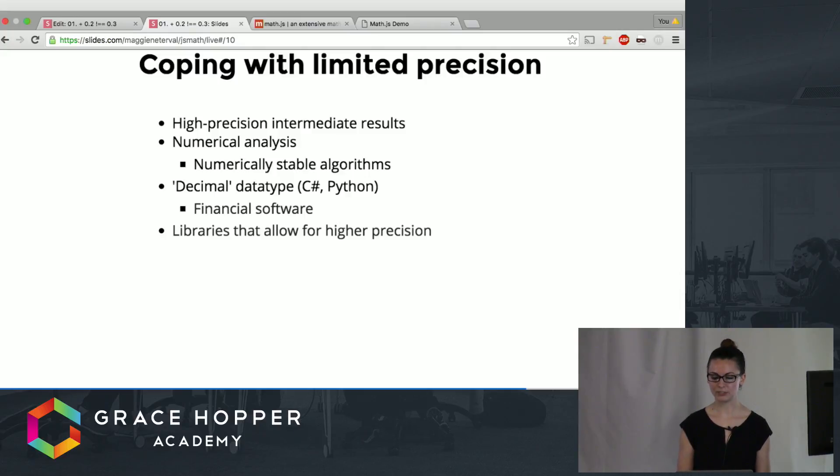Also in other languages such as C sharp and Python there's a special decimal data type that allows you to kind of overwrite the way numbers are stored usually in JavaScript and actually store them as a decimal which is how financial software deals with storing information about money precisely.